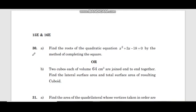Question 30: Find the roots of the quadratic equation x square plus 3x minus 18 equals 0 by the method of completing the square. Or, two cubes each of volume 64 centimeter cube are joined end to end together. Find the lateral surface area and total surface area of the resulting cuboid.